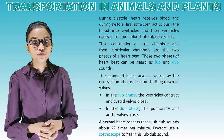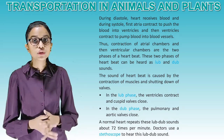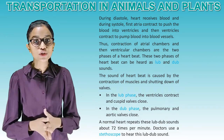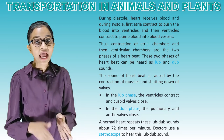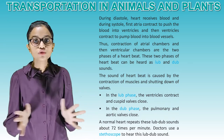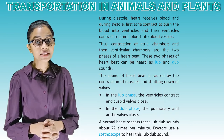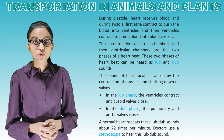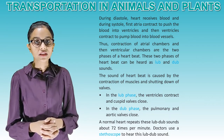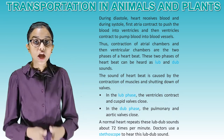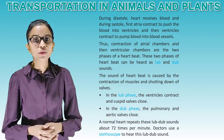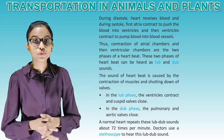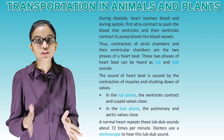Contraction of atrial chambers and then ventricular chambers are the two phases of heartbeat. These two phases of heartbeat can be heard as lub and dub sounds. The sound of heartbeat is caused by the contraction of muscles and shutting of the valves. In the lub phase, the ventricles contract and cuspid valves close. In the dub phase, the pulmonary and aortic valves close. Our normal heart repeats these lub-dub sounds about 72 times per minute. Doctors use a stethoscope to hear this lub-dub sound.